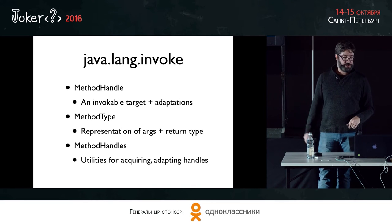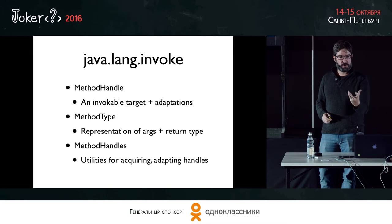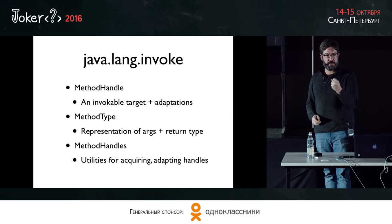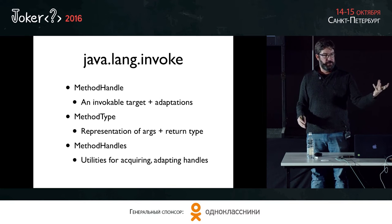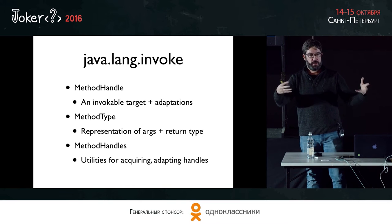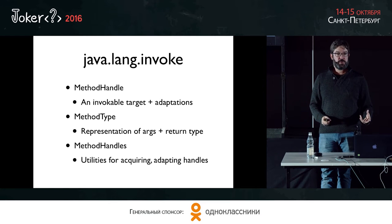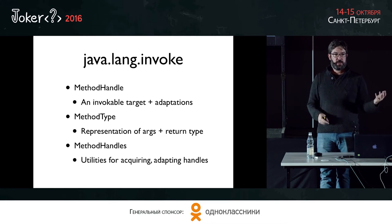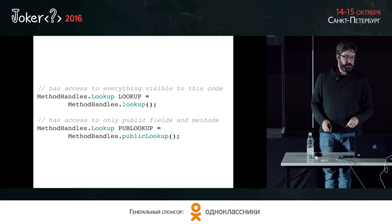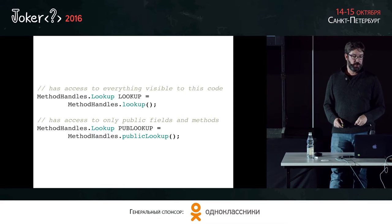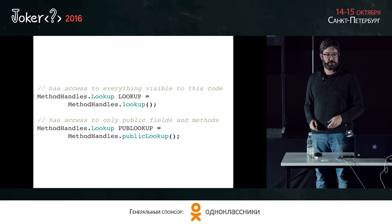The package we're looking at is java.lang.invoke. The main classes are: MethodHandle, which is that invokable target — a function, field, or pointer; MethodType, which boxes up a return value type and a set of argument types into a little object representing that method's type; and the MethodHandles class, which is used to get those function pointers, manipulate them, and wrap them with adaptations.